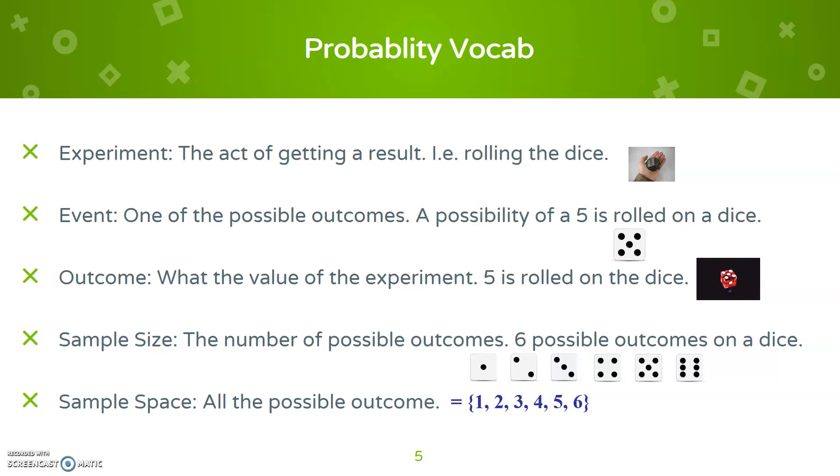The sample size is the number of possible outcomes, say six possible outcomes. And the sample space are all the actual outcomes themselves in numerical forms, like one, two, three, four, five, six.